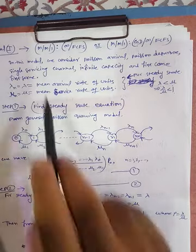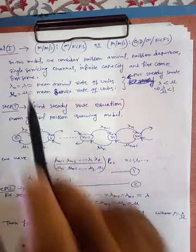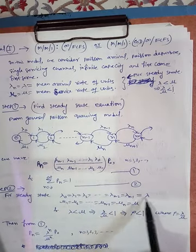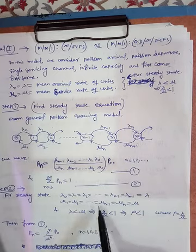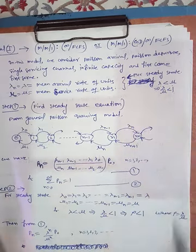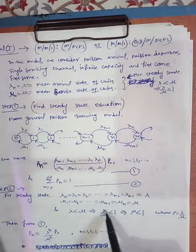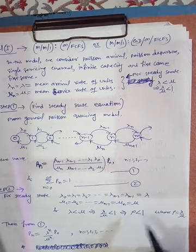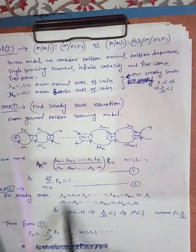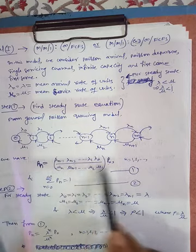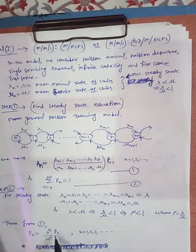For this model's steady state, we assume λₙ = λ and μₙ = μ for all n. So λ₁ = λ₂ = ... = λₙ₋₁ = λ, and μ₁ = μ₂ = ... = μₙ = μ. Since λ < μ, we have λ/μ < 1, which is the traffic intensity ρ, so ρ < 1. Substituting all these values into the Pₙ formula, we get Pₙ = (λⁿ / μⁿ) × P₀ = ρⁿ · P₀, where n = 1, 2, 3, ...